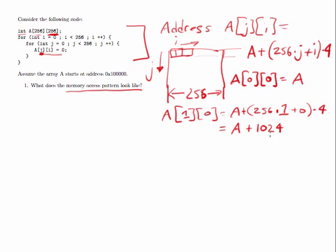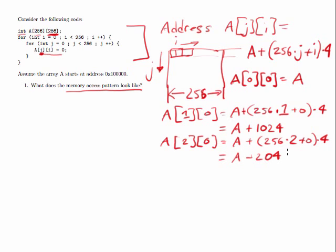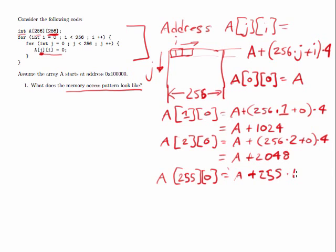256 times four is 1024. Every time we increment in the j direction, we're going to add another 1024. So the second element is going to be at a plus 2048, and so on and so forth, up until the highest value that j is going to reach in this code, which is 255, since it's going to stop before it gets to 256. And that's going to be at address a plus 255 times 1024.